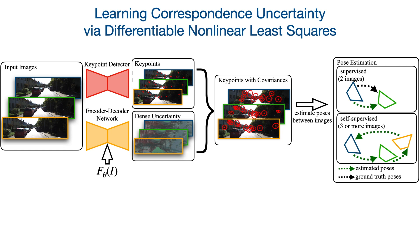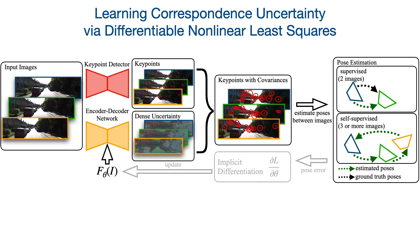Our framework learns the noise distribution for any keypoint extractor by making use of differentiable nonlinear least squares (DNLS). DNLS allows our framework to train a neural network directly from pose estimation errors. The obtained covariances lead to better pose estimates and reduced long-term pose drift in a visual odometry setting.